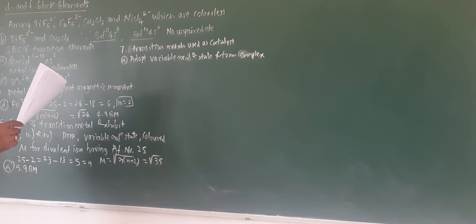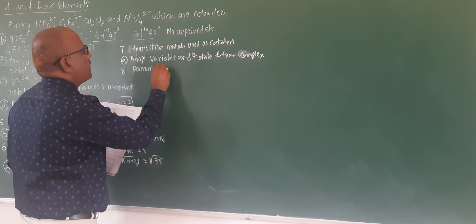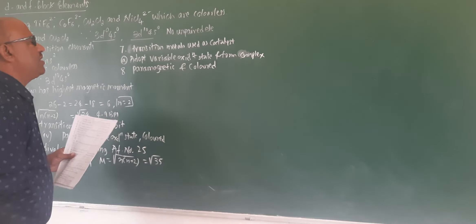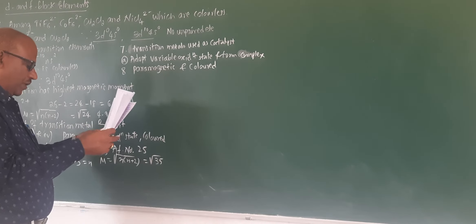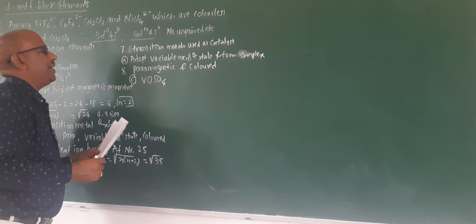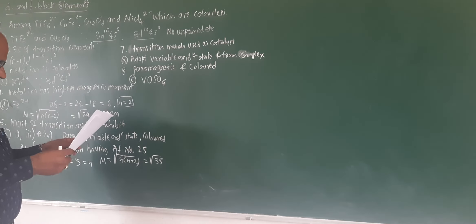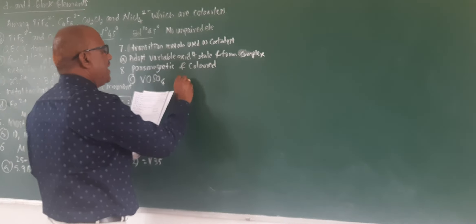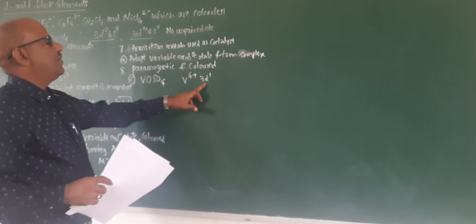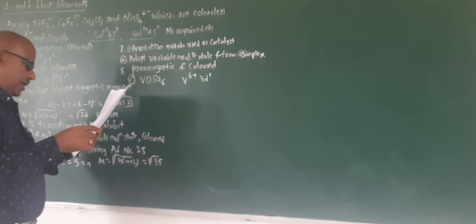The compound that is both paramagnetic and colored: the unpaired electrons cause both magnetic field attraction and color. A specific example is VOSO₄ — vanadium oxysulfate — in which vanadium is in the +4 oxidation state with the configuration 3d¹. Since there is one unpaired electron in the d orbital, it is paramagnetic as well as colored.